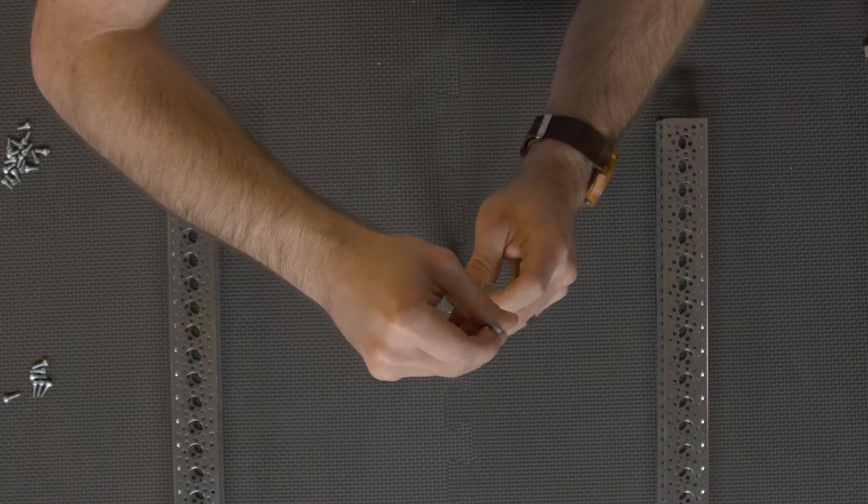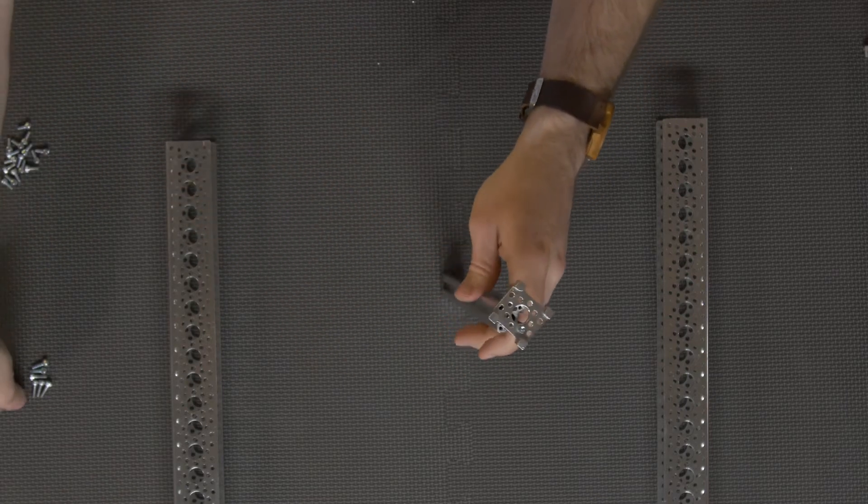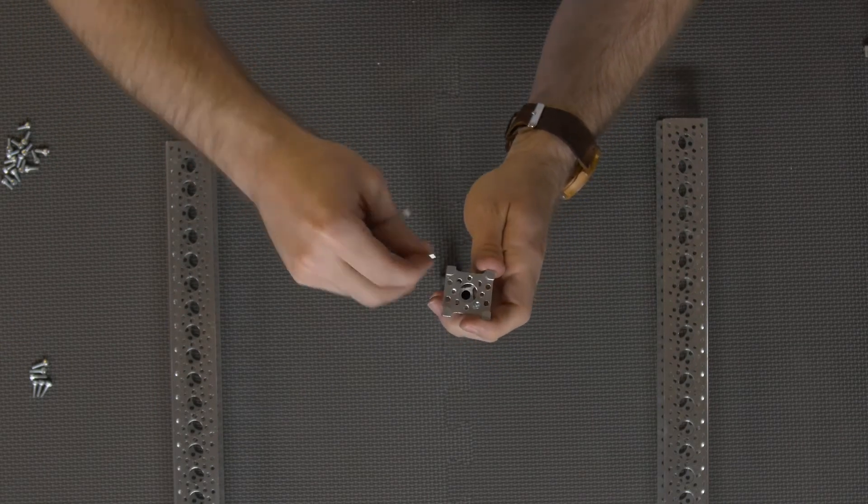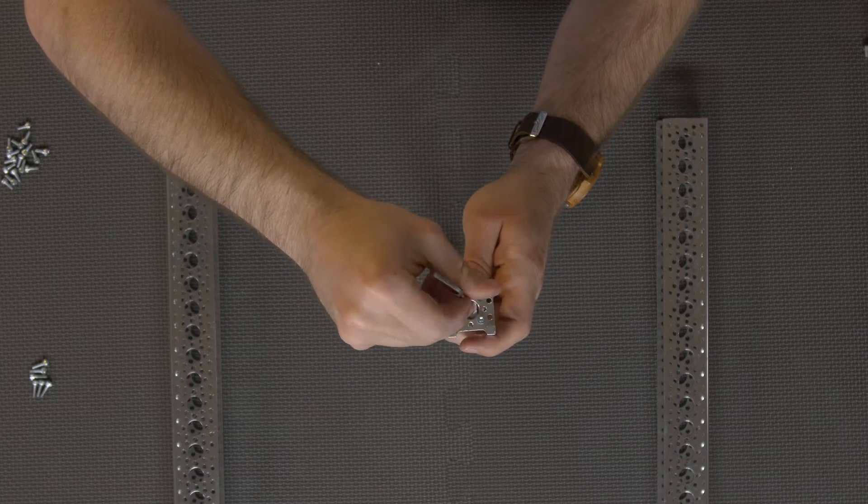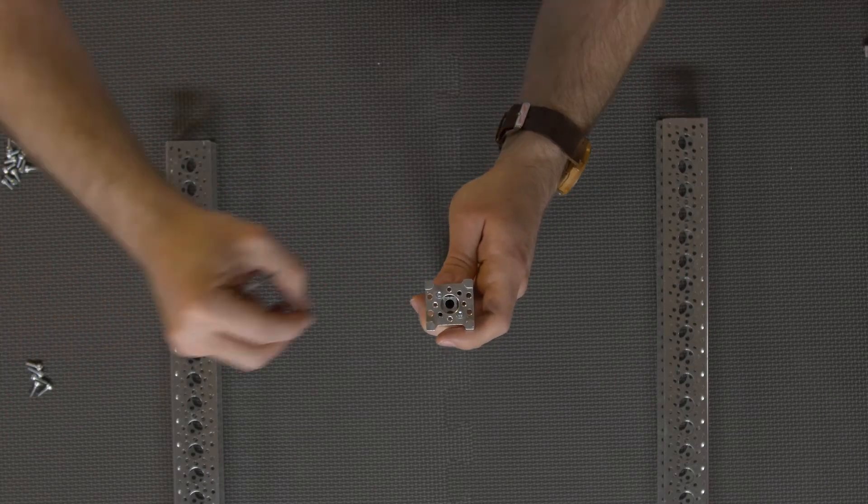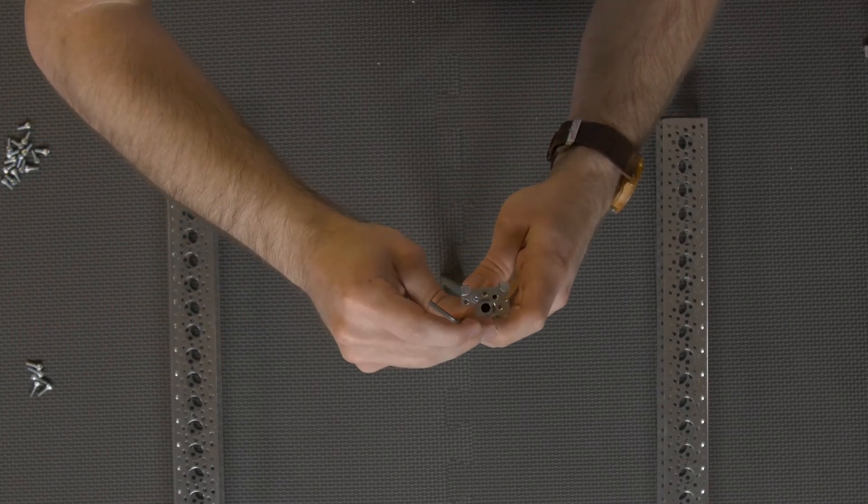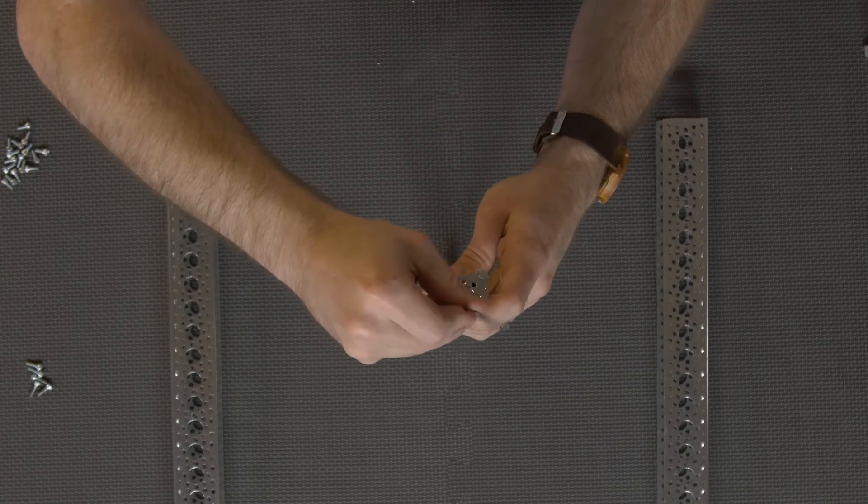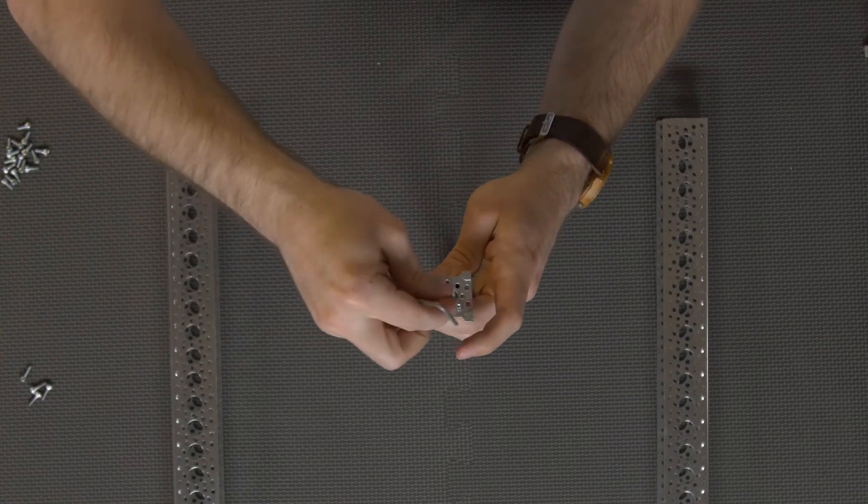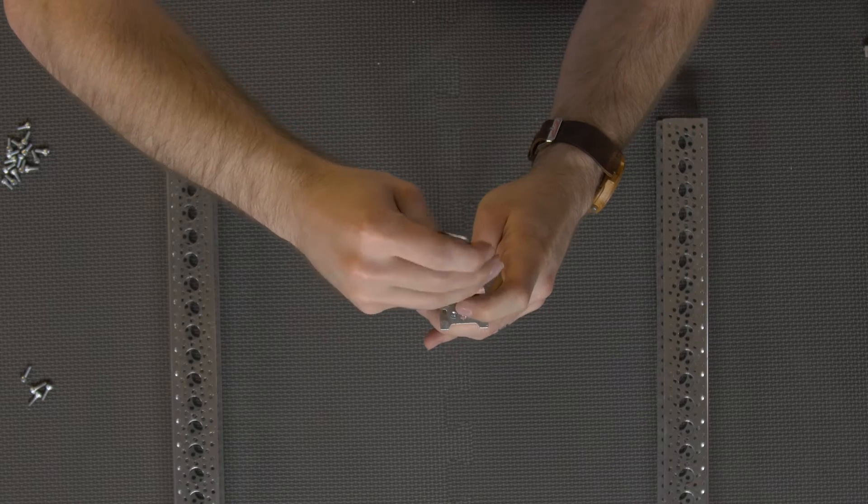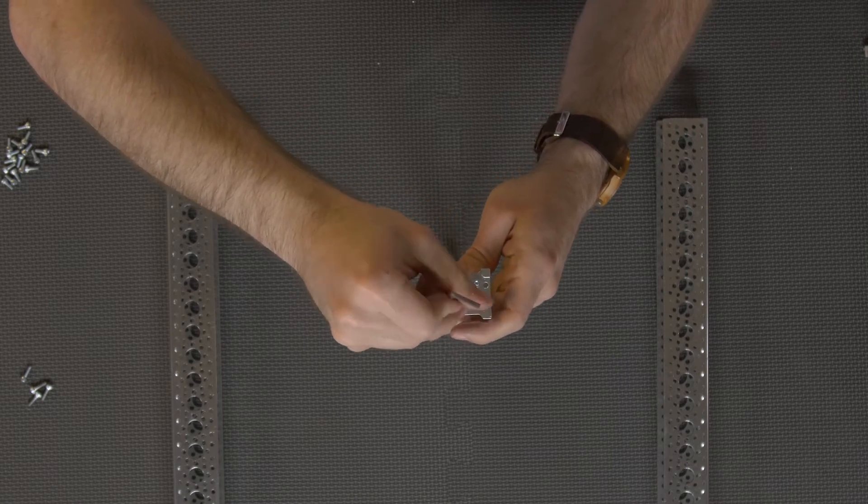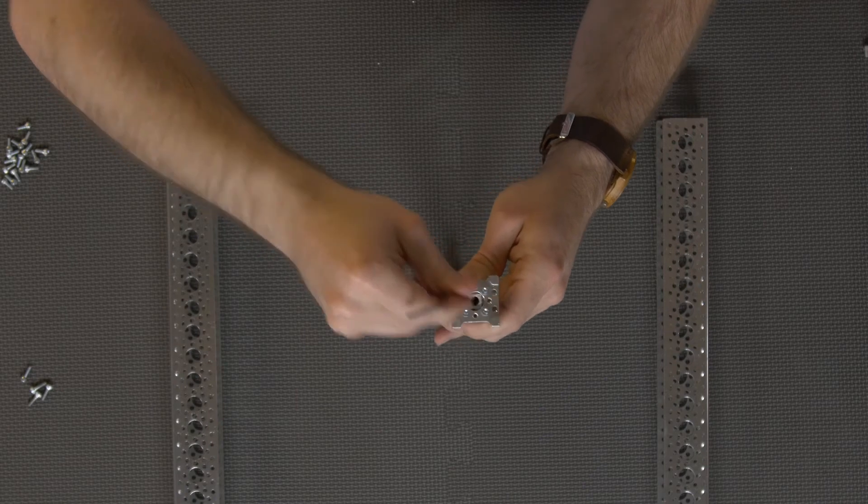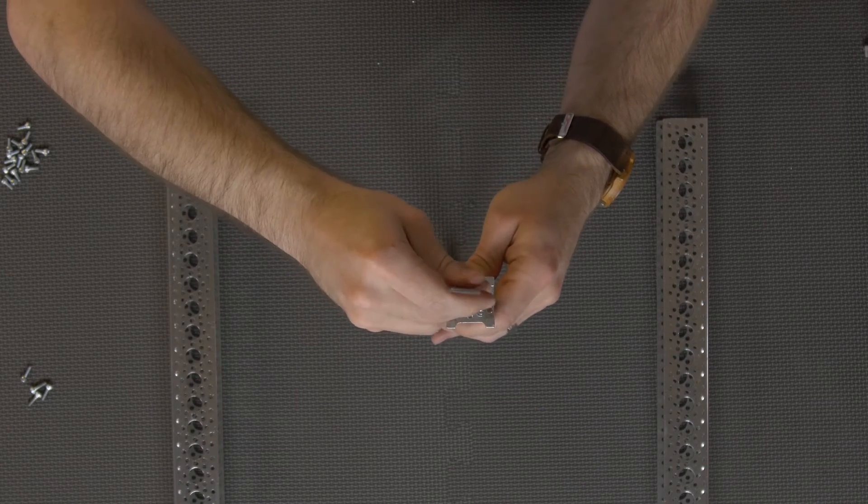I like to put in the first screw really nice and loose. Use it as a locator. Then go around and put all the rest of them in fairly loosely. Then when everything is situated, located, and where I want it to be, I'll go through and tighten everything down. And I like to go diagonally as I go around and do that. Just helps to make sure that everything is going to square up nicely.